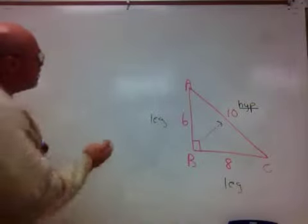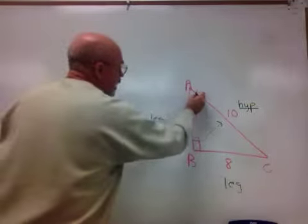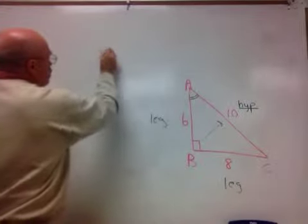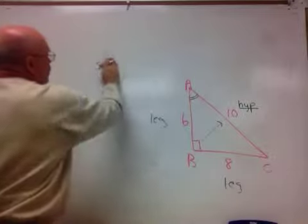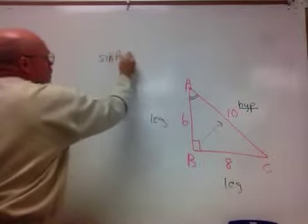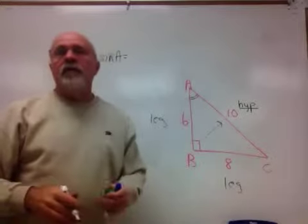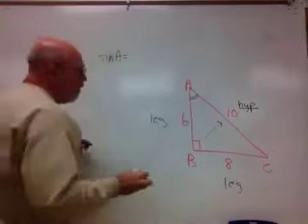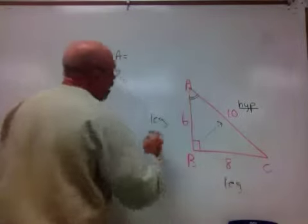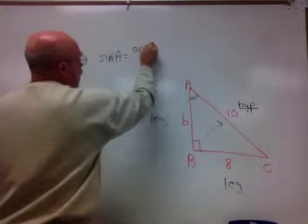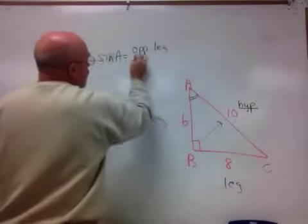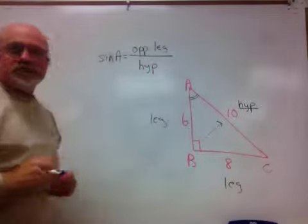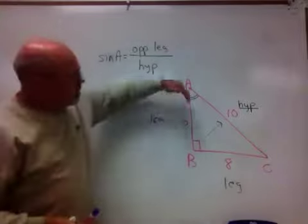Okay, the sine of an angle—and I'm going to do this in terms of angle A for right now. The sine of angle A is defined to be the length of the side opposite angle A. In fact, the leg opposite angle A, so the opposite, O-P-P for opposite, leg, divided by the hypotenuse. So, again, sine is just a fraction.